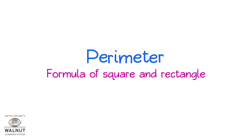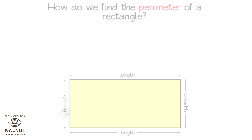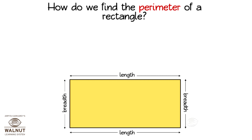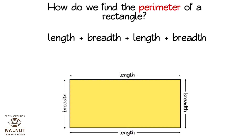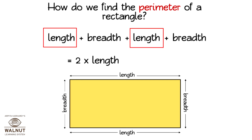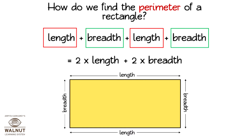Perimeter: Formula of a Square and Rectangles. How do we find the perimeter of a rectangle? We have to go around the rectangle and add up all the sides. So we get length plus breadth plus length plus breadth. This is equal to 2 times the length plus 2 times the breadth — that is 2 into length plus 2 into breadth.